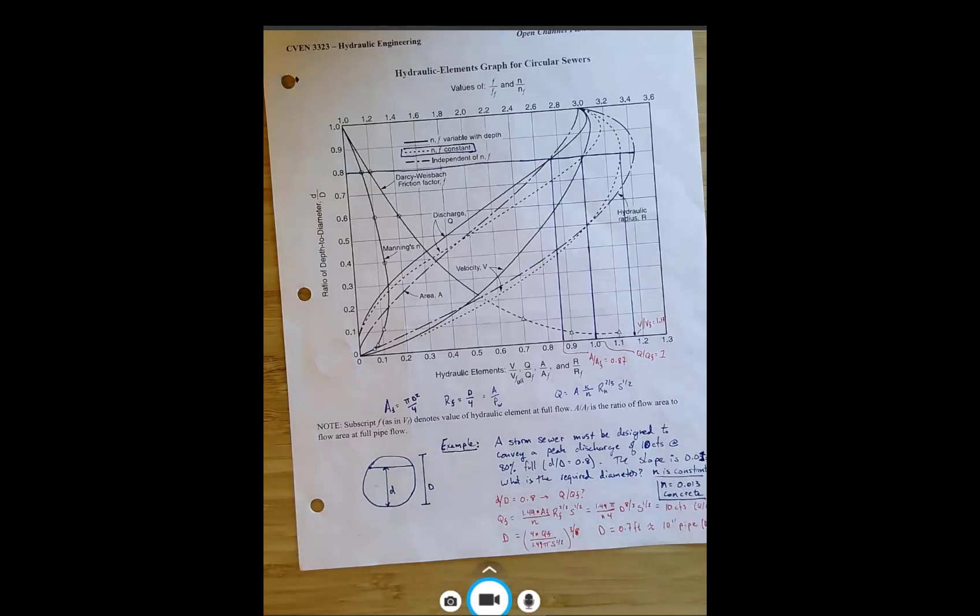So now we were able to solve for D as a function of Q using these curves. And we didn't have to get into the complex trigonometry that's involved in circular pipe areas and hydraulic radii. Okay. So I'll post this just so you guys have it.